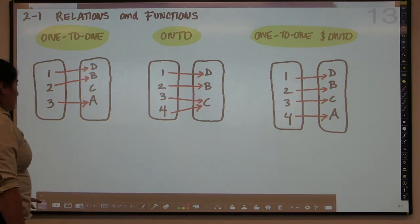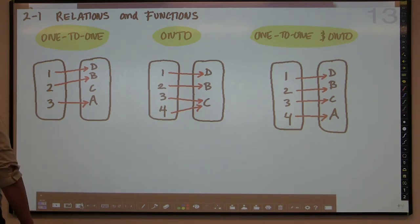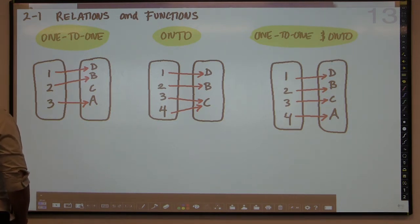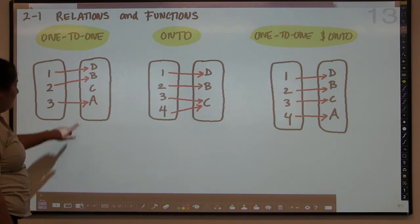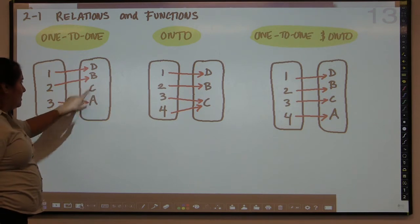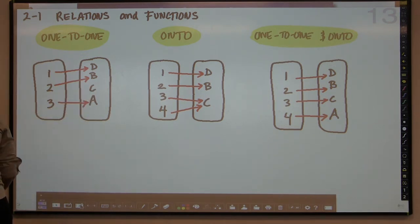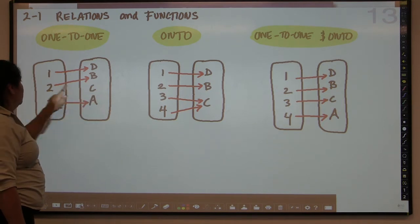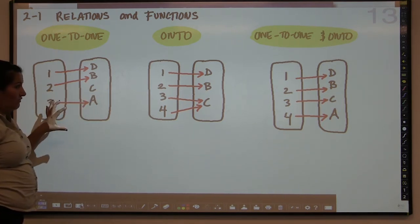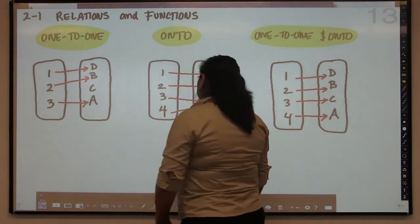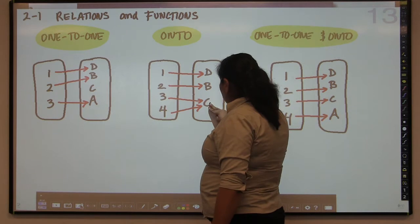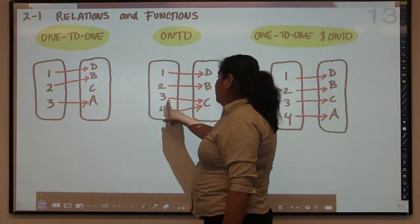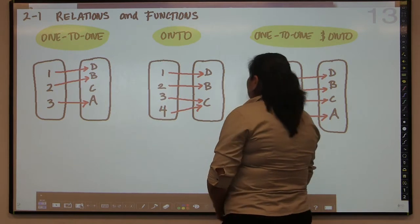Then we have what we call an onto function. An onto function differs from a one-to-one function in that the elements in the range all have to be used. So that previous example would not work for onto because there's nothing mapped to 'c'. For an onto function, each element of the range corresponds to an element in the domain. Over here we have an example of an onto function where everything in the range is mapped to something from the domain.